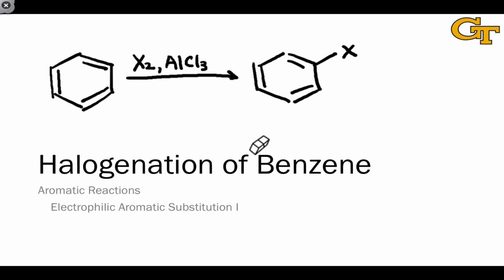The first example we're going to look at of electrophilic aromatic substitution is the halogenation of benzene, which is accomplished using the elemental halogen reagent X2 — where X is Br or Cl — and AlCl3, which is a Lewis acidic promoter of this reaction.